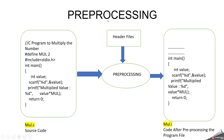First, we can start with preprocessing. You can see this slide — this is a normal program as written by the user or programmer. They have mentioned some command lines, defined macros, included header files, and written normal functions and function body with statements. During preprocessing, mainly four steps will happen. The first one is comments removal — any comments the user has added will be removed during preprocessing.